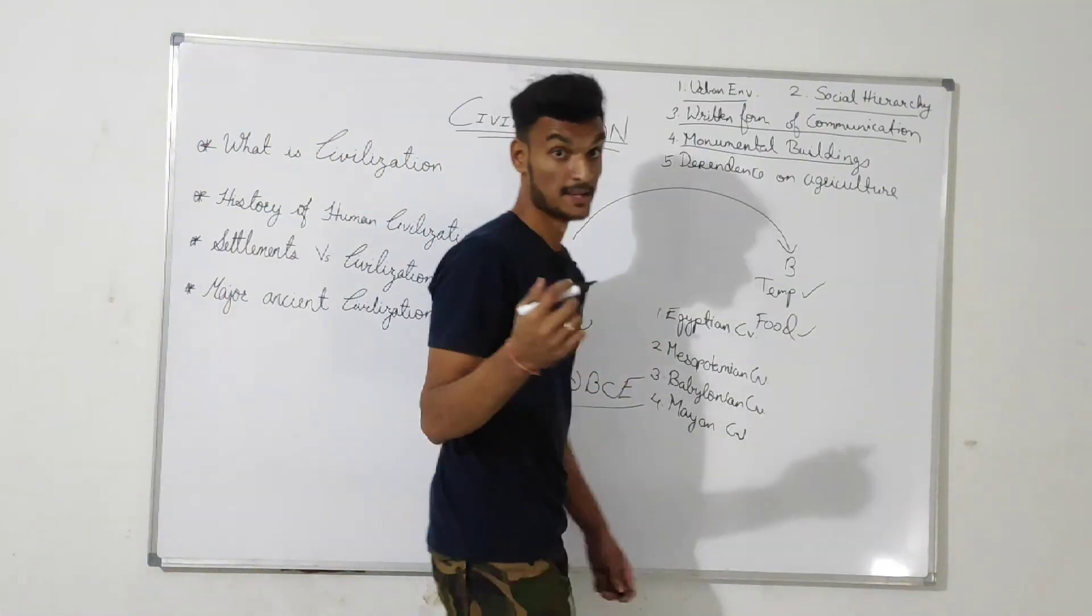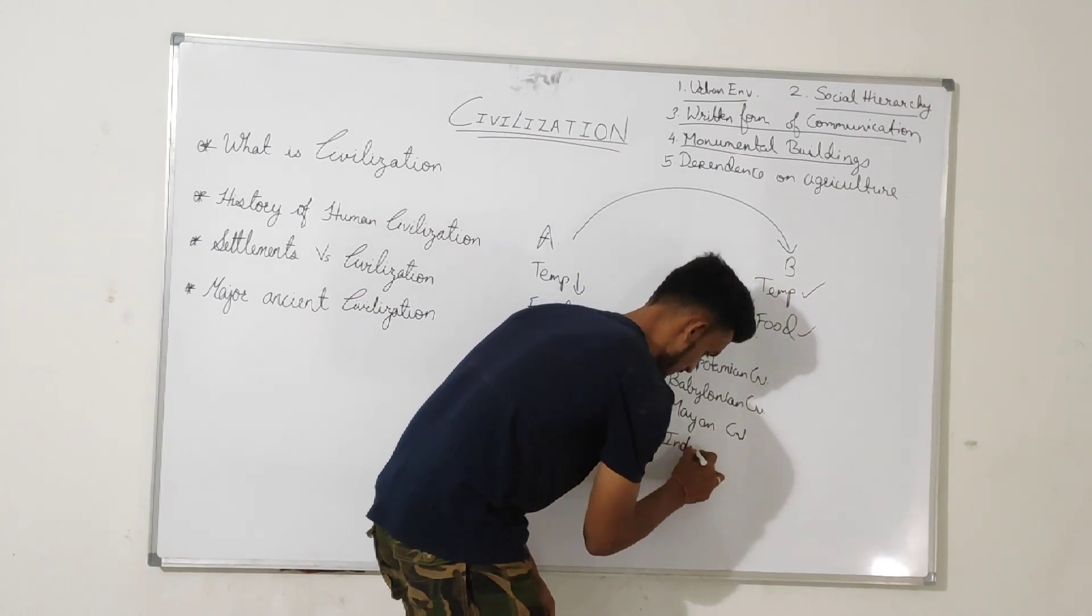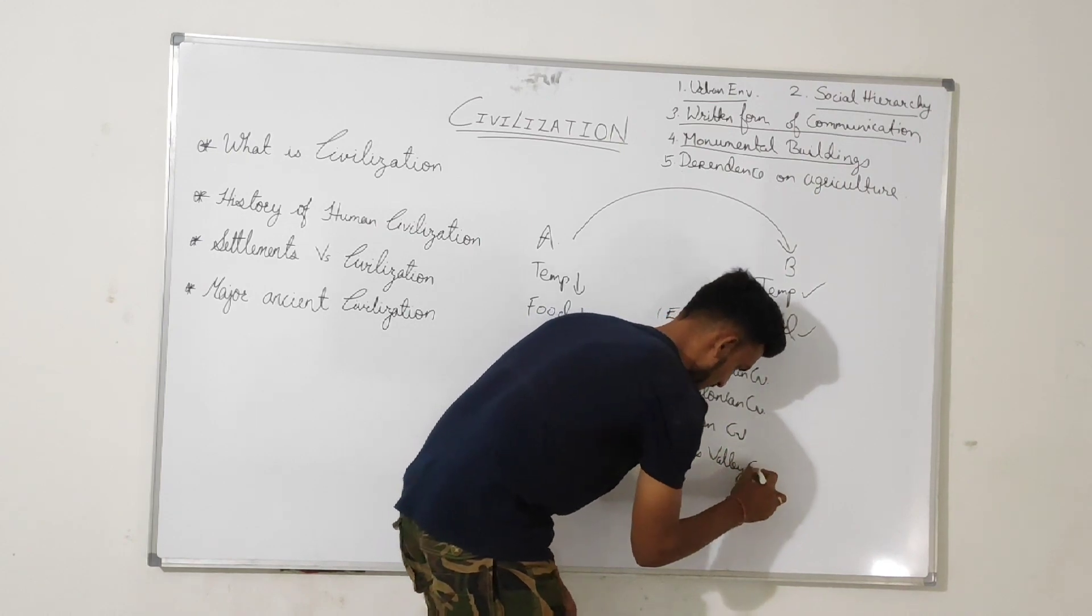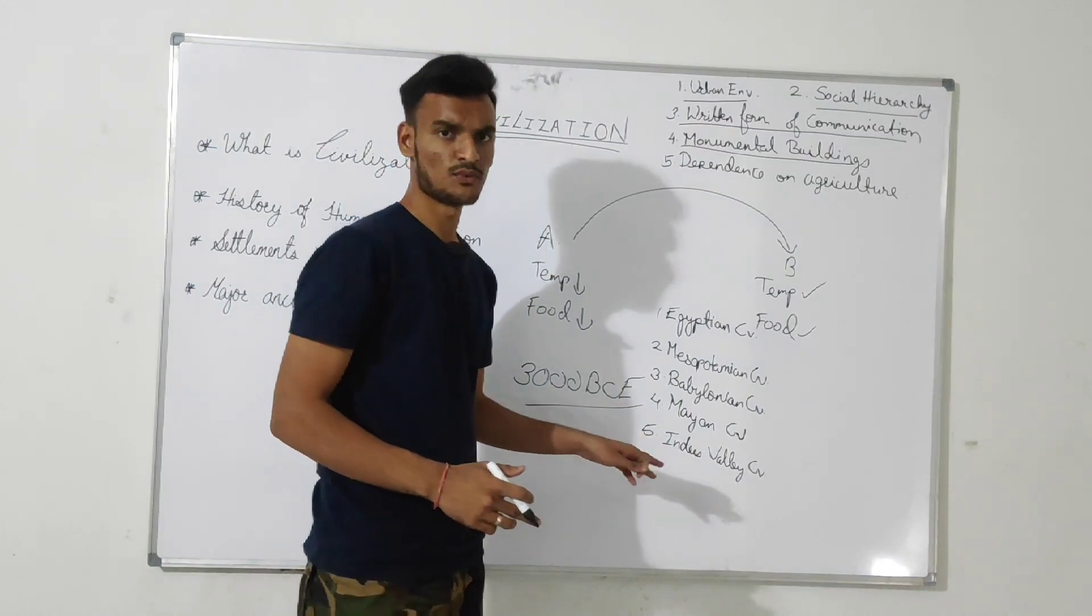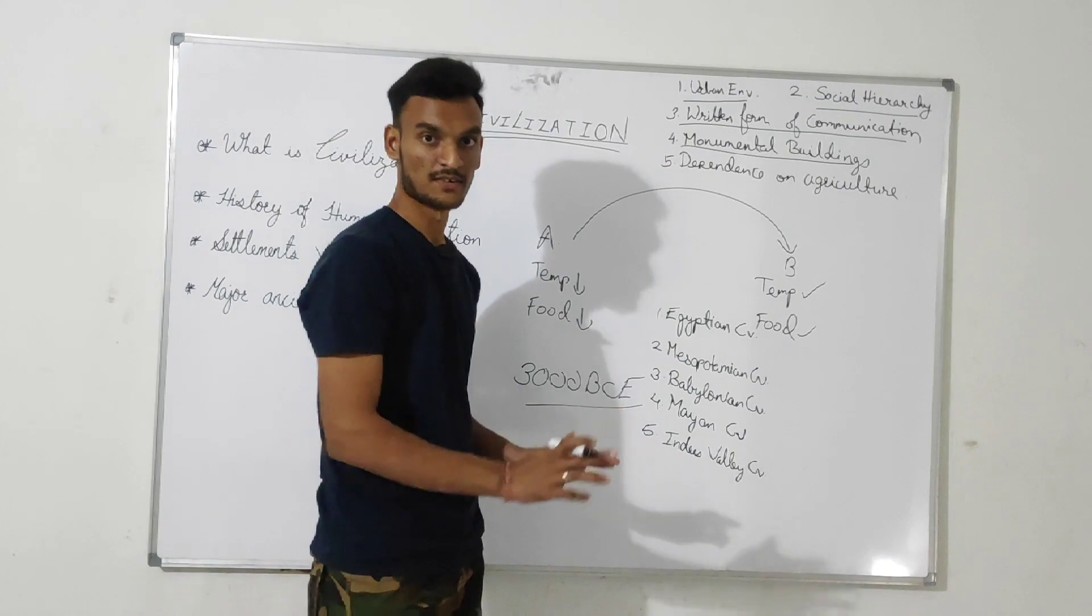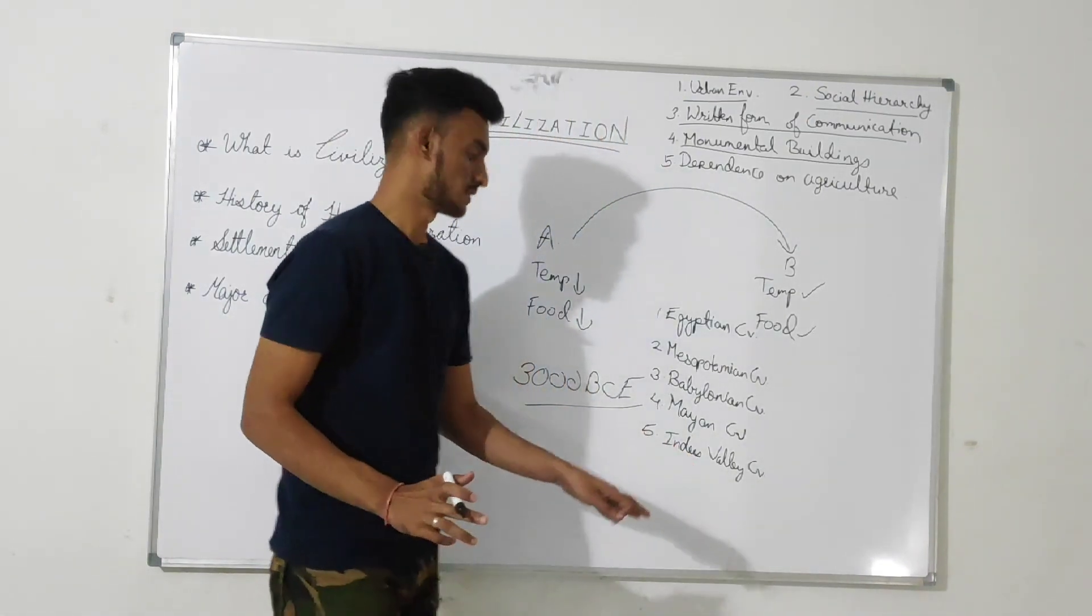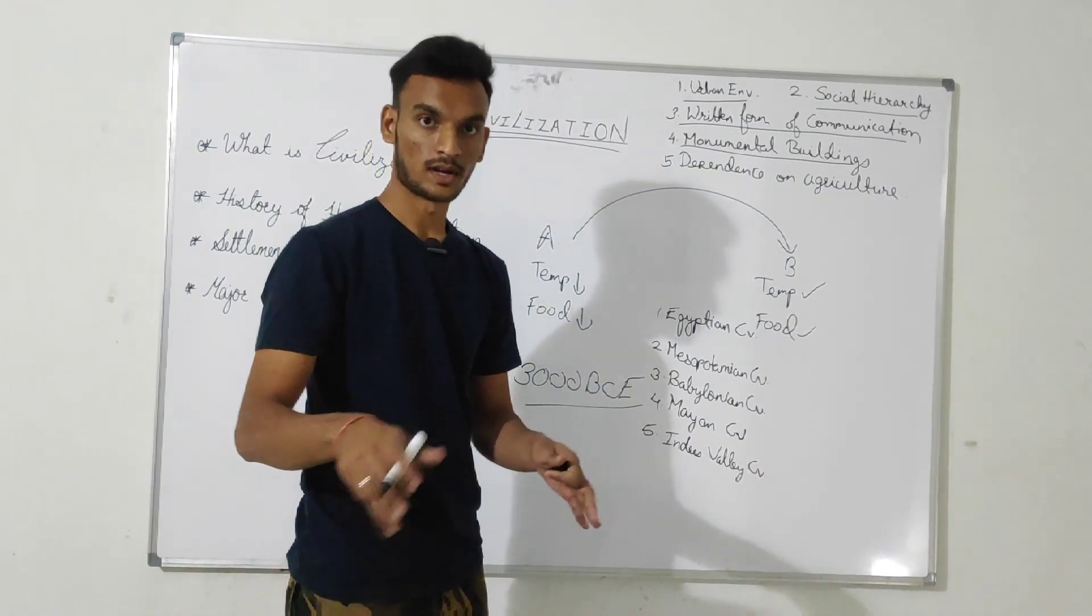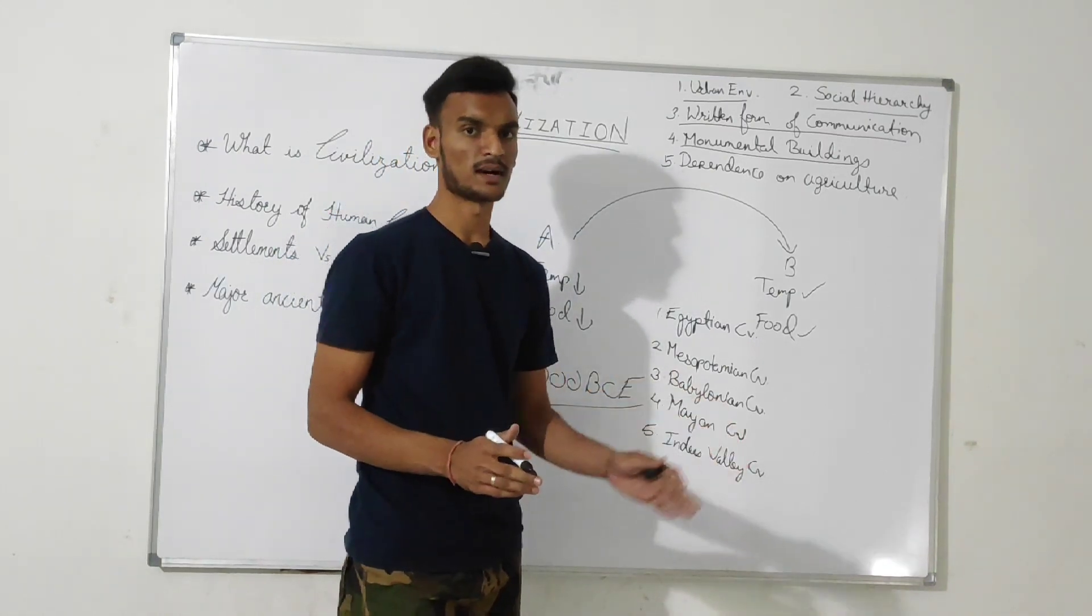And next is Indus Valley civilization. From the name, we can think out that this civilization was settled down near the Indus region or the Indus river region. This civilization is based in India and Pakistan, the border region of both the countries. Some sites are found in India, some sites are found in Pakistan.